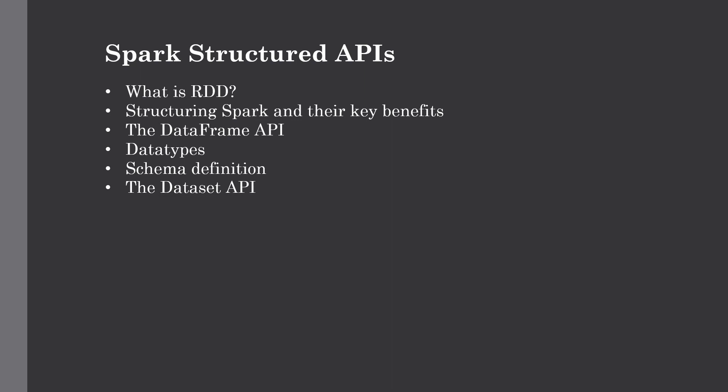The DataFrame API is very popular right now, and it was a successor of the RDD — Resilient Distributed Dataset. We have already run our first application which was totally based on DataFrame, where we created a DataFrame on top of a CSV file and applied some transformations and actions. But we need to understand what RDD is and the reason for adding structure to Spark, because some of you might be wondering why we are not using RDD that much nowadays.